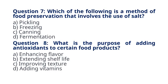Question 7. Which of the following is a method of food preservation that involves the use of salt? A. Pickling B. Freezing C. Canning D. Fermentation. The correct answer to question 7 is option A. Pickling. Explanation: pickling involves preserving food in a solution of salt, vinegar, and other seasonings to inhibit the growth of bacteria.